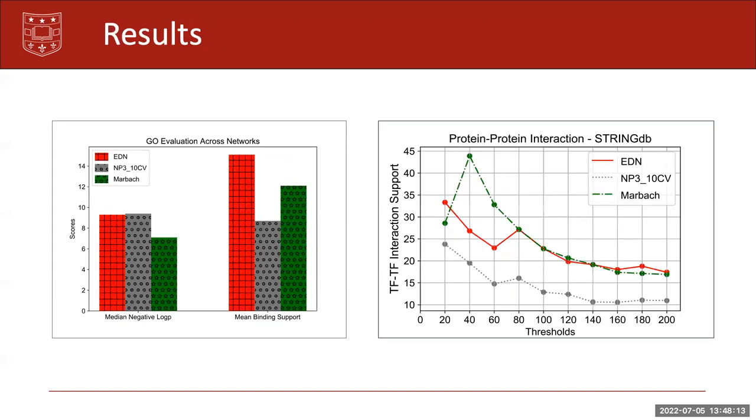And we compared our network with two metrics, gene ontology enrichment and protein-protein interaction from STRING DB. The graph on the left shows our gene ontology evaluation result. The first graph shows the results on the median negative log p across TFs in each network, where log p value for each TF is from the most significant GO term for that TF.